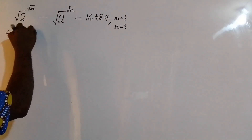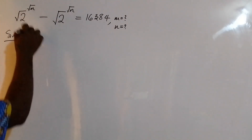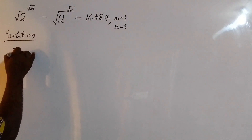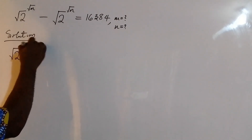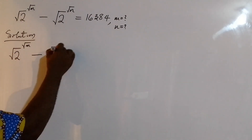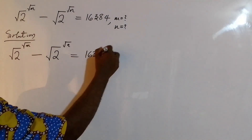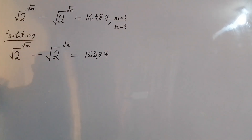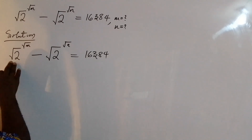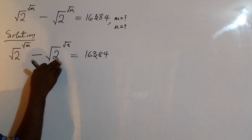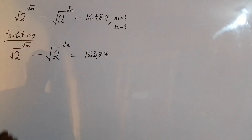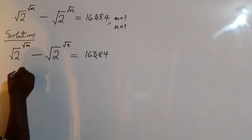I bring down the question: root 2 to the power of root m, minus root 2 to the power of root n, equals 16384. The first thing I'm going to do is rewrite root 2, and I do that using the exponent law.